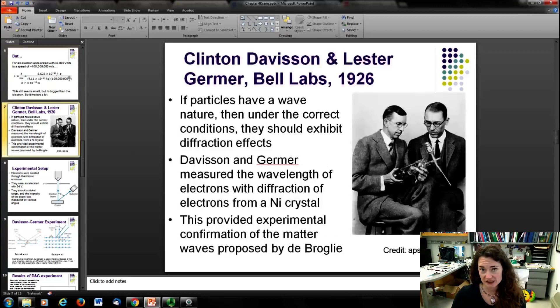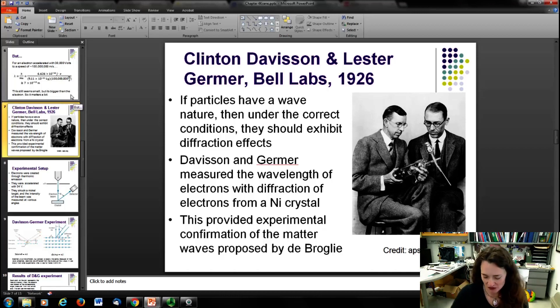All right. Well, as soon as you have a new idea, a good idea in physics, you need to test it experimentally. No idea is safe until it's been tested and tested and tested and tested. Well, one of the first rounds of testing of the wave nature of matter was done by these two guys here, Clinton Davisson and Lester Germer, and they did their experiments at Bell Labs in 1926. And their idea was pretty simple. If particles have a wave nature, then under the correct conditions, they should exhibit these diffraction effects that are very easy to see in light. And so what they did was they measured the wavelength of electrons using their diffraction from a crystal of nickel. And this provided the experimental confirmation of matter waves that were originally proposed by de Broglie.